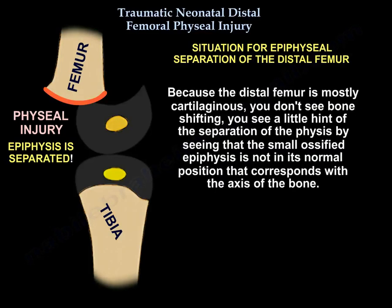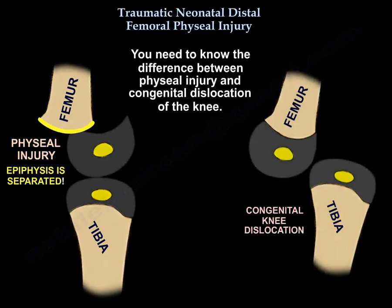Because the distal femur is mostly cartilaginous, you don't see bone shifting. You just see a small hint of that separation of the physis: the small ossified epiphysis is not in its normal position that corresponds with the axis of the bone. It is a physeal injury — a physeal separation. You want to know the difference between this physeal injury and congenital dislocation of the knee.